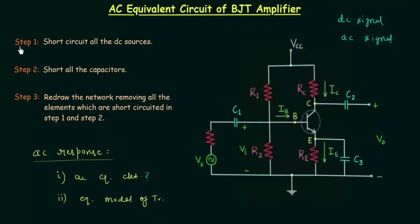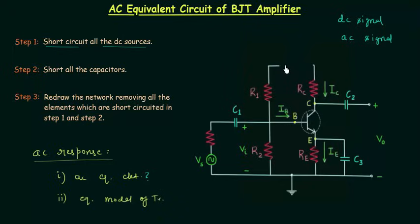There are three steps involved in this process. In step number one we need to short circuit all the DC sources. We have only one DC source, that is VCC, the biasing potential, and we need to short circuit VCC. I will replace VCC and in place of VCC we will have ground.